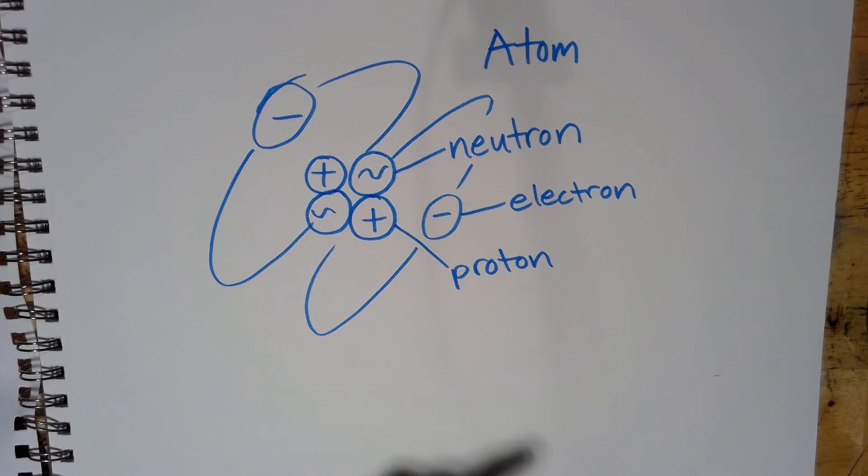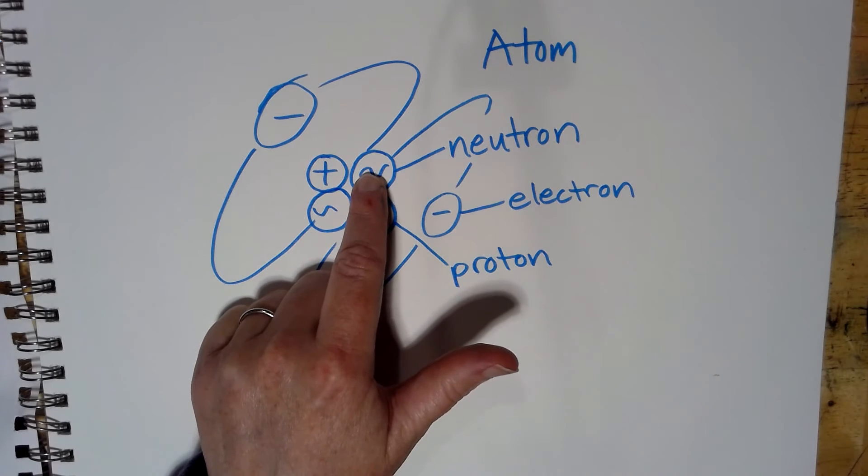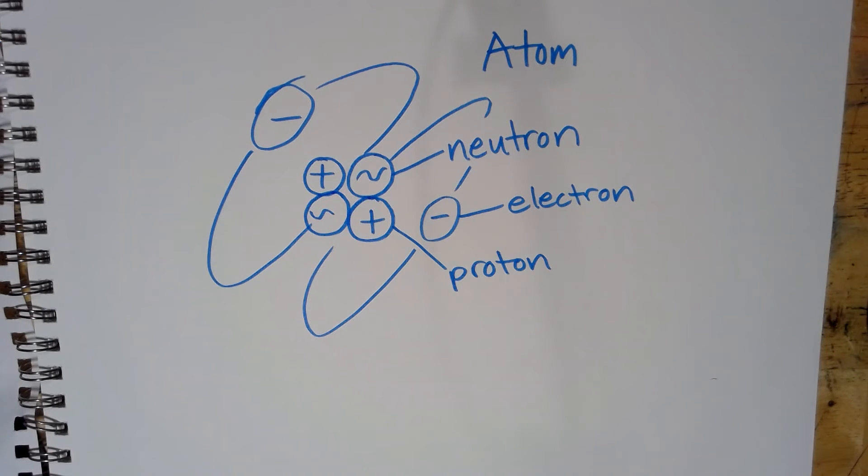So you have protons that are positive, neutrons that are neutral, and electrons which are negative.